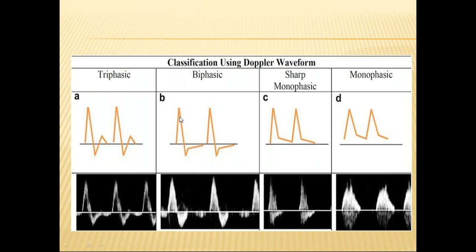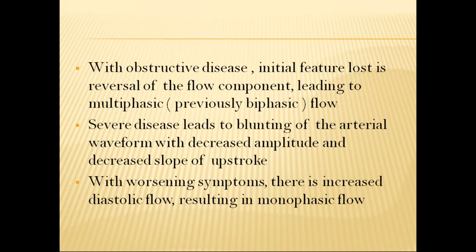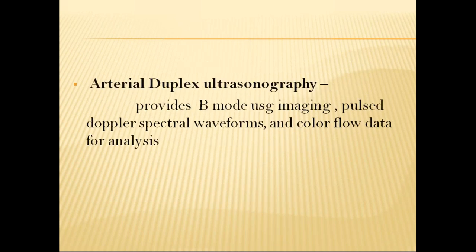Arterial duplex ultrasonography provides B-mode USG imaging, pulsed Doppler spectral waveforms, and color flow data for analysis. DSA — digital subtraction percutaneous angiography — uses Seldinger's technique, involving injection of radiopaque dye into the arterial tree by a percutaneous catheter. It provides dynamic arterial flow information and can be combined with endovascular intervention. Complications include bleeding, hematoma, false aneurysm, thrombosis, arterial dissection, distal embolization, renal dysfunction, and allergic reaction.